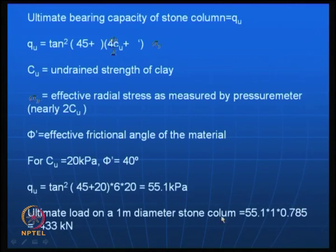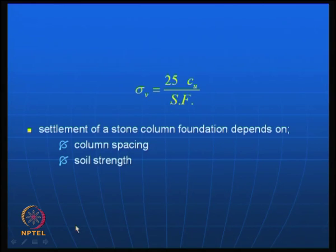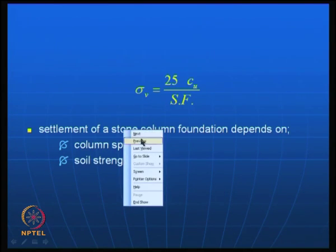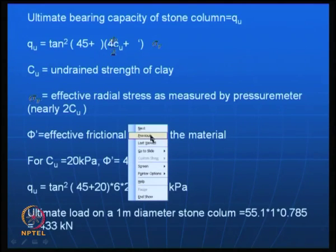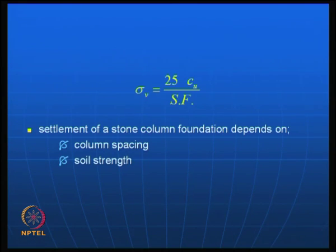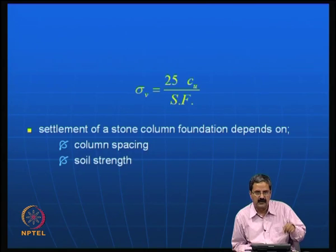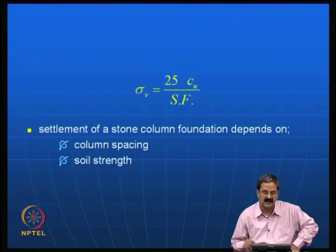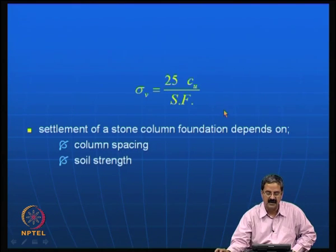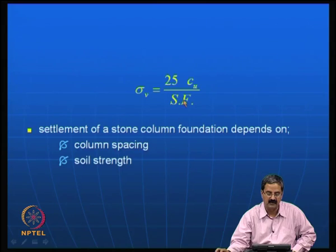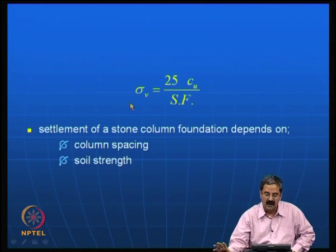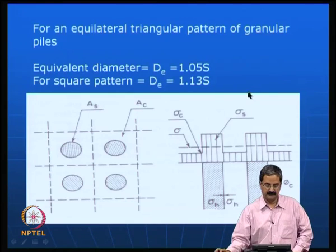The ultimate load on a one-diameter stone column can be calculated in this manner — you can get about 433 kN, which is a reasonable number. One can calculate the capacity of the stone column provided you know the properties of the soft soil and properties of the stone material. Some empirical ratios exist — by this process, you can increase the capacity by at least 25 times with a suitable factor of safety of about 2.5. This needs to be treated with caution because people have to do rigorous exercises. There are two patterns: a square pattern or a triangular pattern.